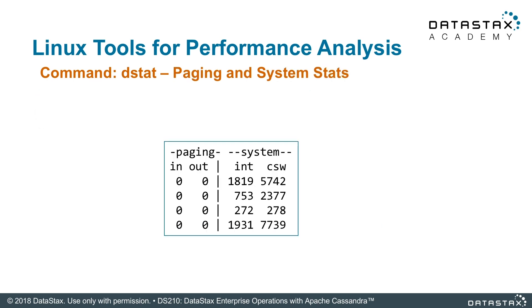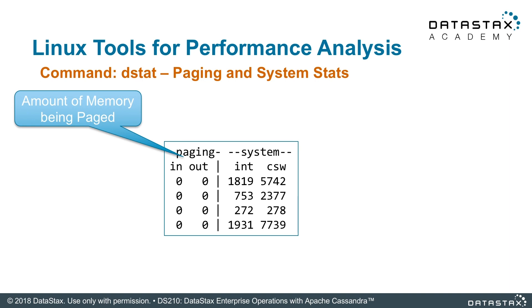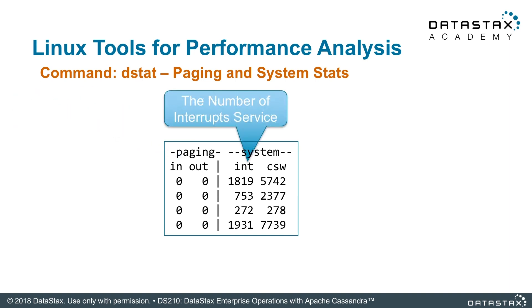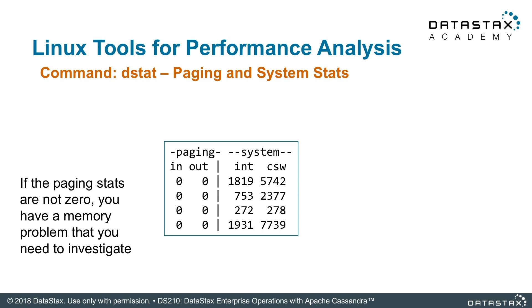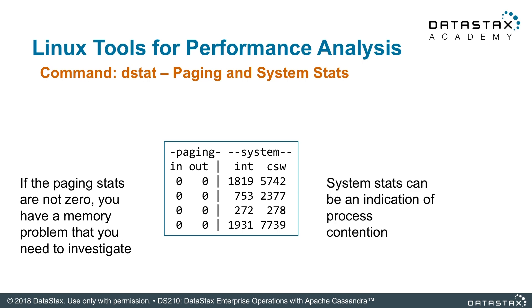With paging, since we really don't recommend that you page your data inside of a running Cassandra or DataStax Enterprise node, those numbers should be close to or at zero — and this is where you find out if that's actually true. The system statistics have to do with how well your CPU is doing. With DataStax Enterprise 6, this is a big change because you should start seeing these numbers go down quite a bit due to the way it manages the CPU — you should see fewer interrupts and even fewer context switches.